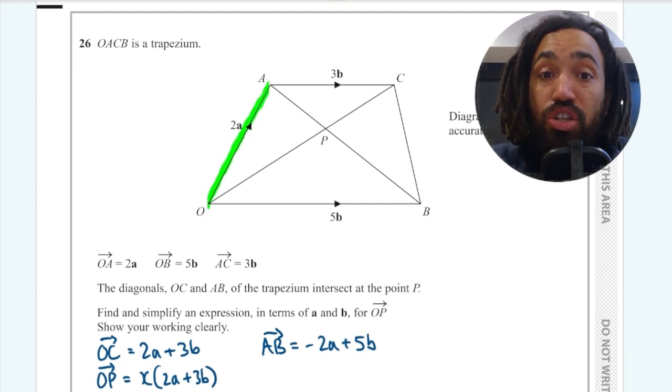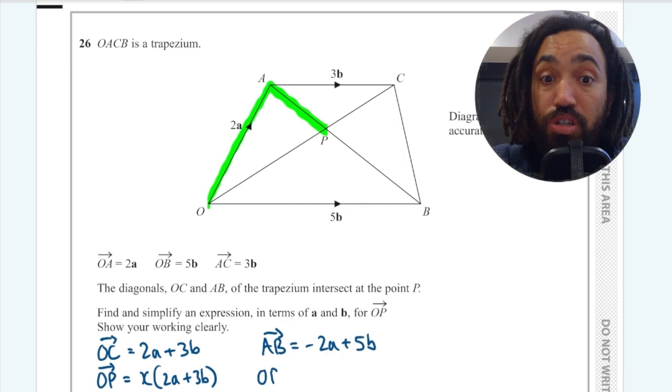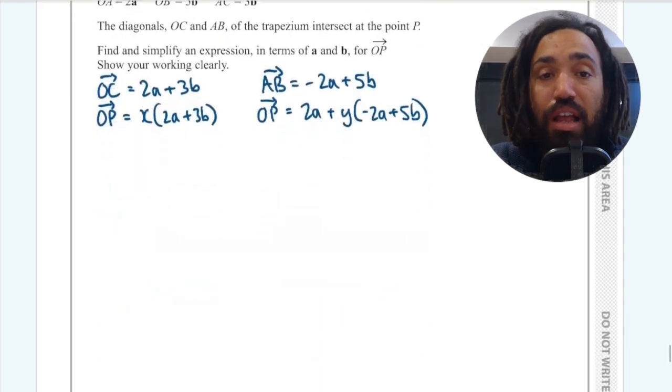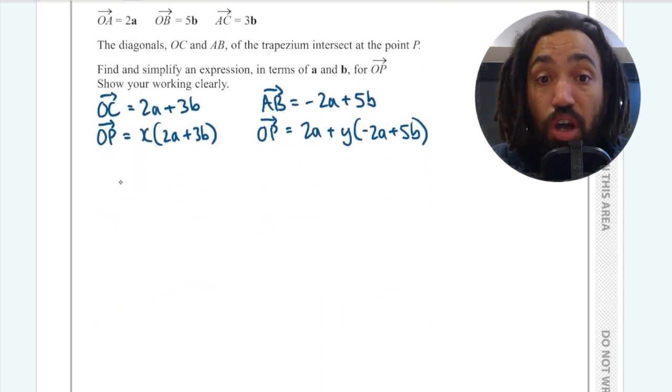And now I can use that vector to find another expression for OP. So I can write that OP is 2A plus AP which is some fraction Y of minus 2A plus 5B. And that's great. Now I've got two expressions for OP. I can equate them.